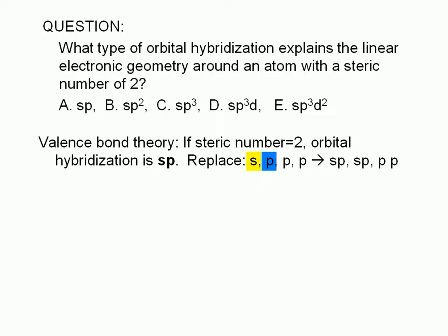It is assumed that in this case, once the atom shares electrons with another atom, it no longer has a valence S orbital and three valence P orbitals. Instead, it now has two SP orbitals and two P orbitals. The correct answer is A.